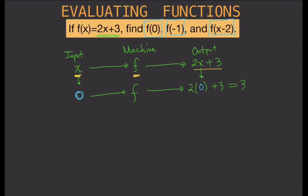So the output is 3. Written formally: f of zero equals 2 times zero plus 3, which equals 3. That's how you evaluate a function at a specific input.